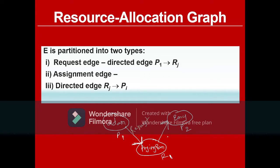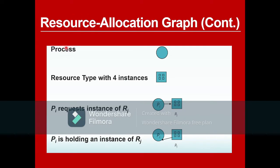So we have two edge types: request edge and assignment edge. Processes are denoted with circles. Resources are denoted with rectangles, and inside the rectangle, dots represent how many instances of that resource exist. For example, four dots mean four instances — like four frying pans in the home: frying pan 1, 2, 3, and 4.